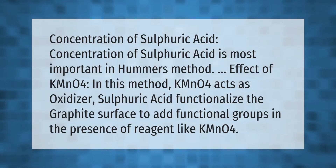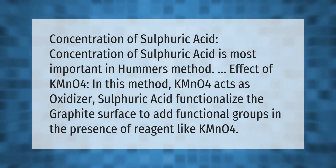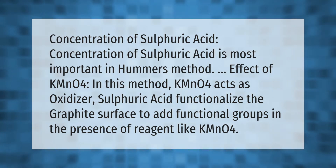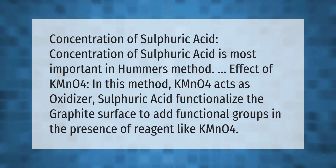The concentration of sulfuric acid is most important in Hummer's method. Potassium permanganate acts as the oxidizer in this method, while sulfuric acid functionalizes the graphite surface to add functional groups in the presence of a reagent like potassium permanganate.